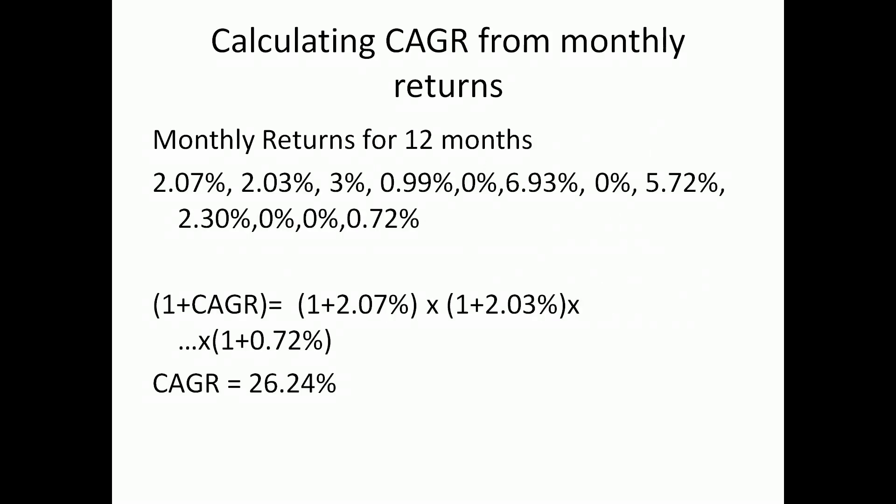In order to do that, we need to understand how to calculate CAGR from a set of monthly returns. Suppose I have a set of 12 monthly returns — 2.07%, 2.03%, 3%, 0.99% and so on. I can calculate the annual return corresponding to this sequence of monthly returns as follows: 1 plus CAGR equals 1 plus return in month 1, multiplied by 1 plus return in month 2, and so on — 12 such terms multiplied one after the other.